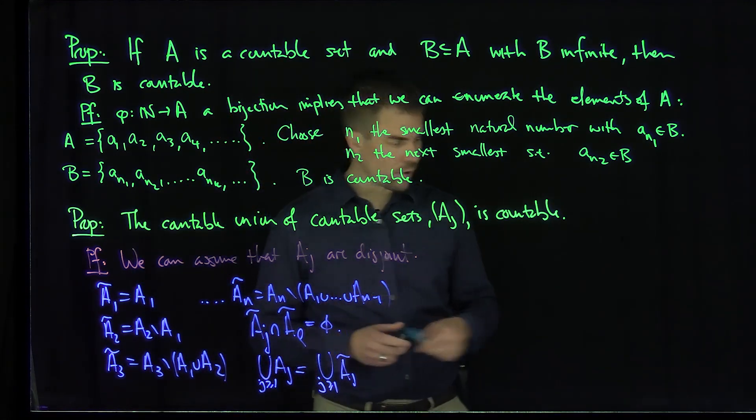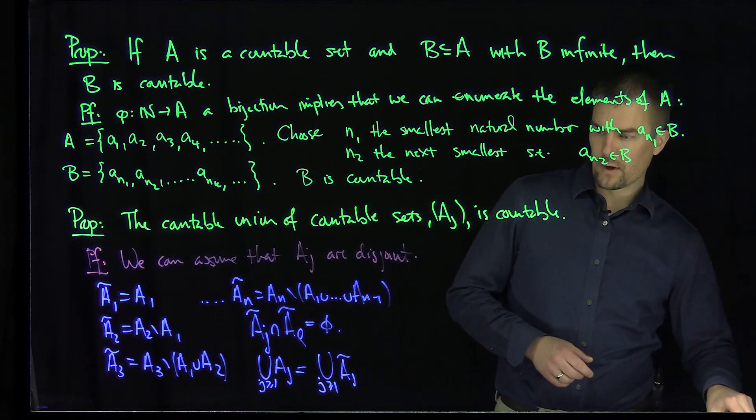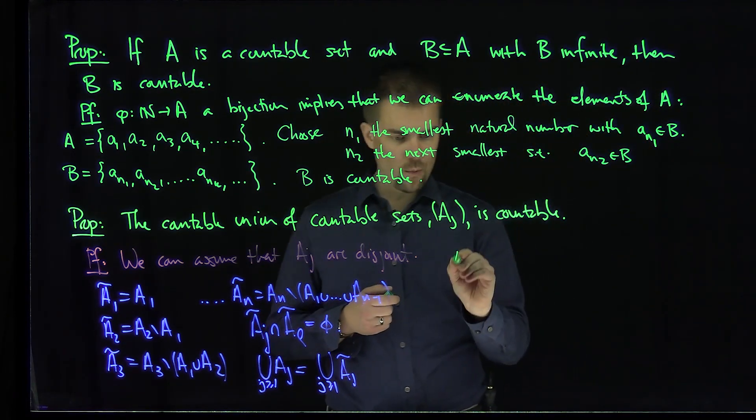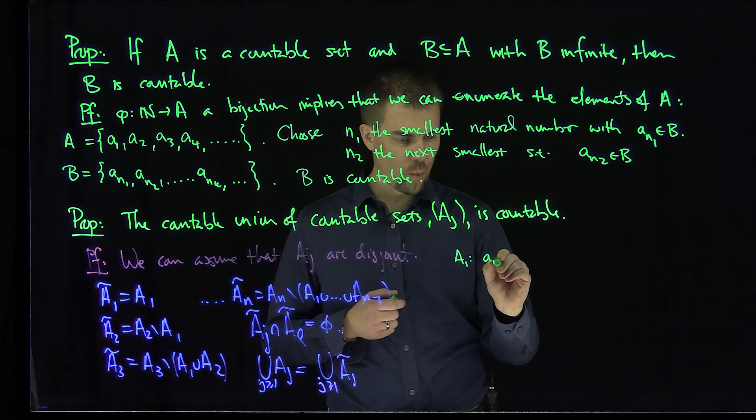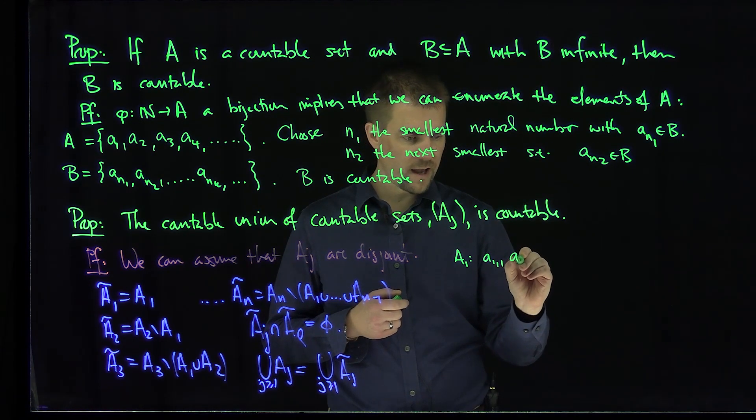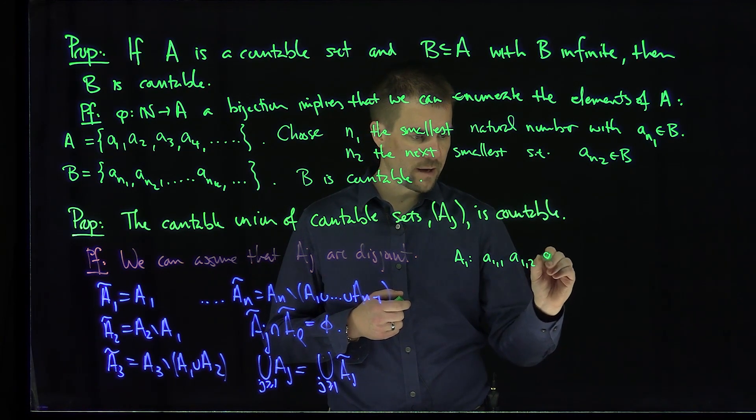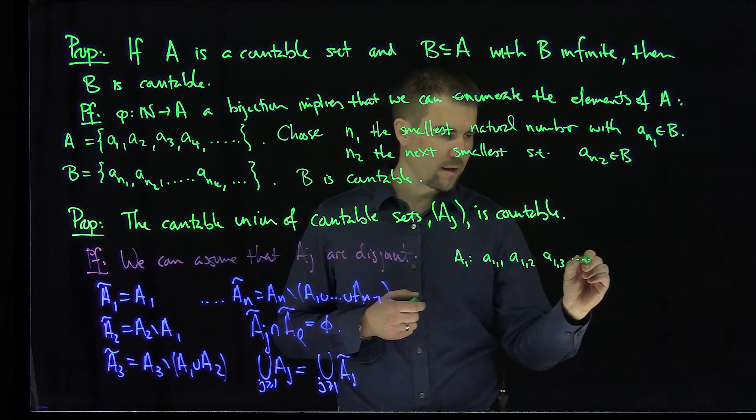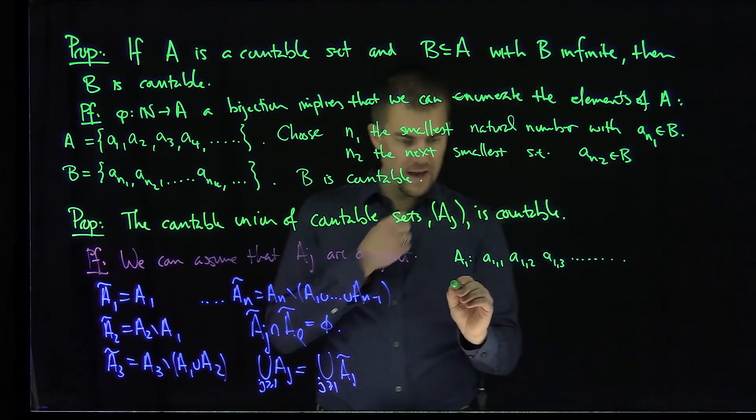And so what we can do now is we can enumerate these A_J. So what I'll do is I'll write this down, so I'm going to write A1 over here. So here's my A1, A1's going to be A1,1, then A1,2, then A1,3, etc.